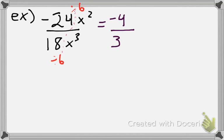Then I want to look at our variables, so the x squared and the x cubed. If I'm looking at things to divide it by, if I divide the top by x squared and I divide the bottom by x squared, I know I'm left with 1x on the bottom still, so I get negative 4 over 3x.